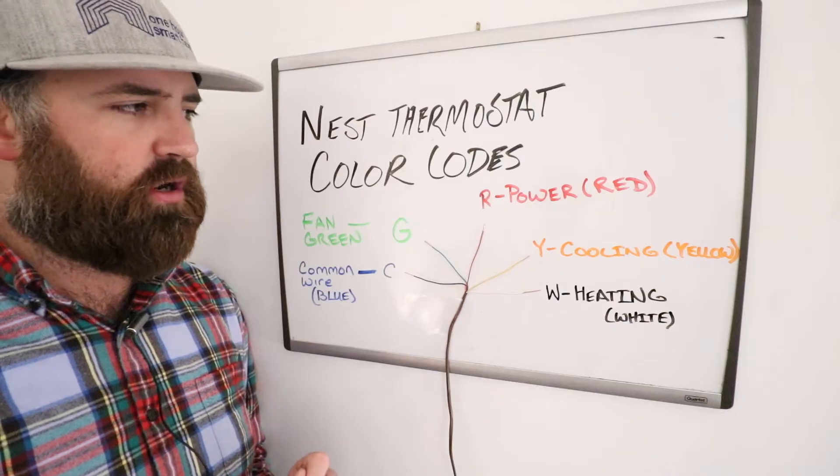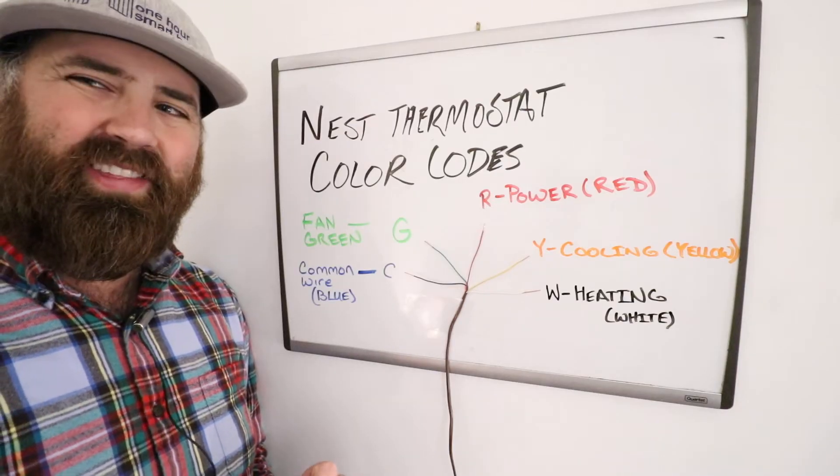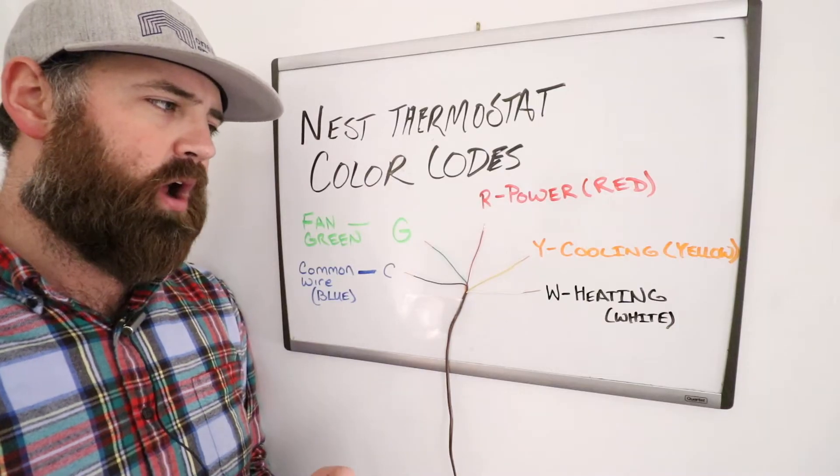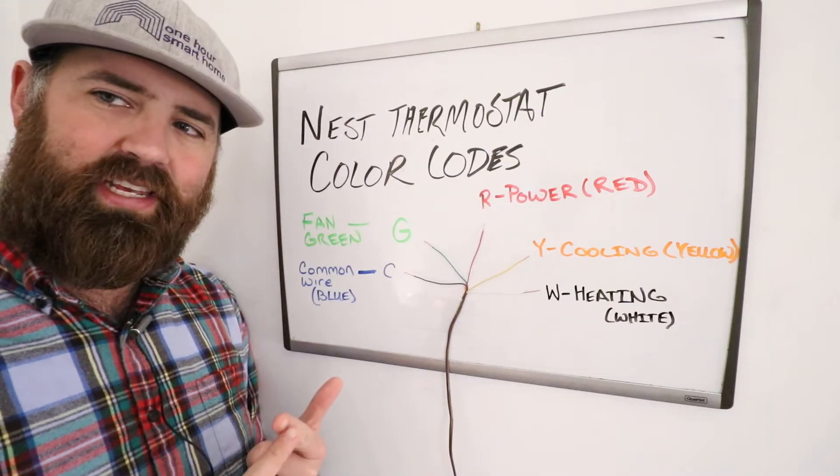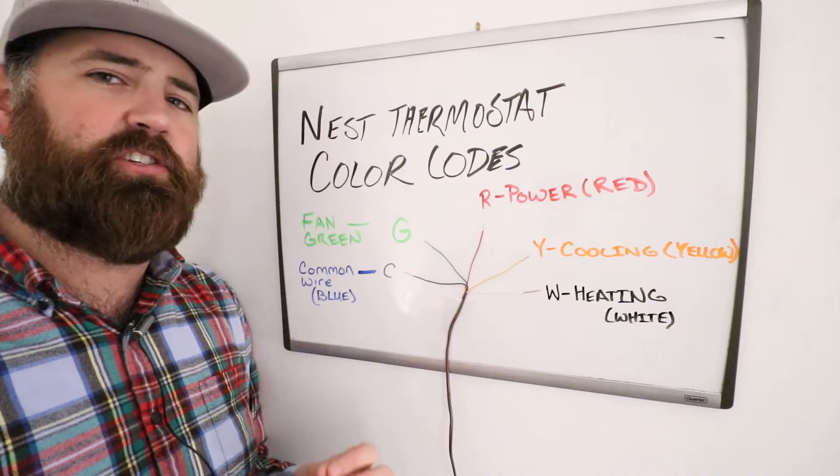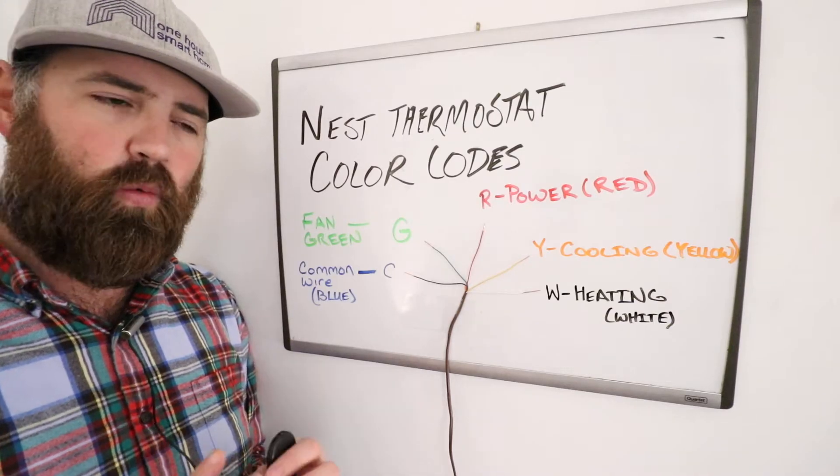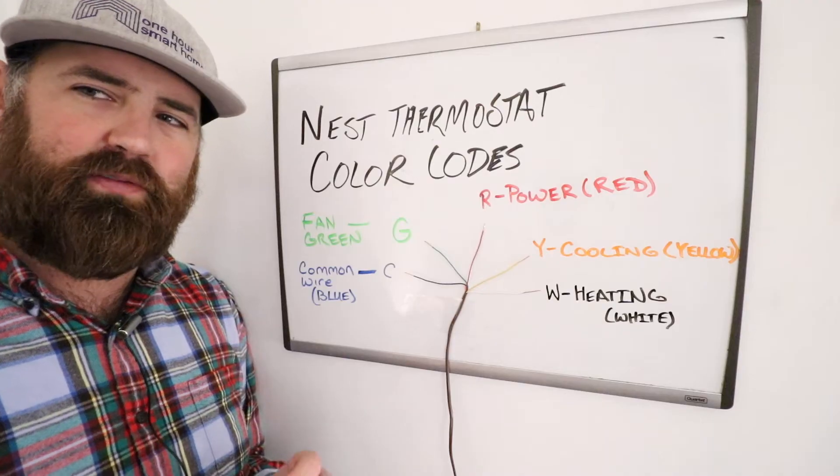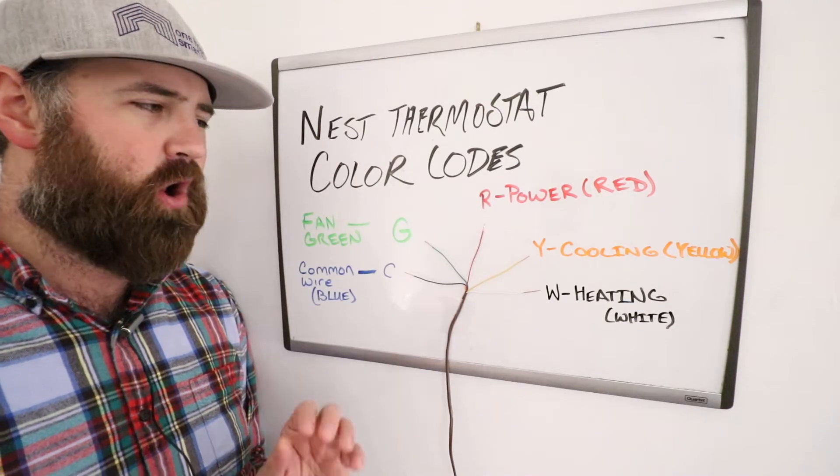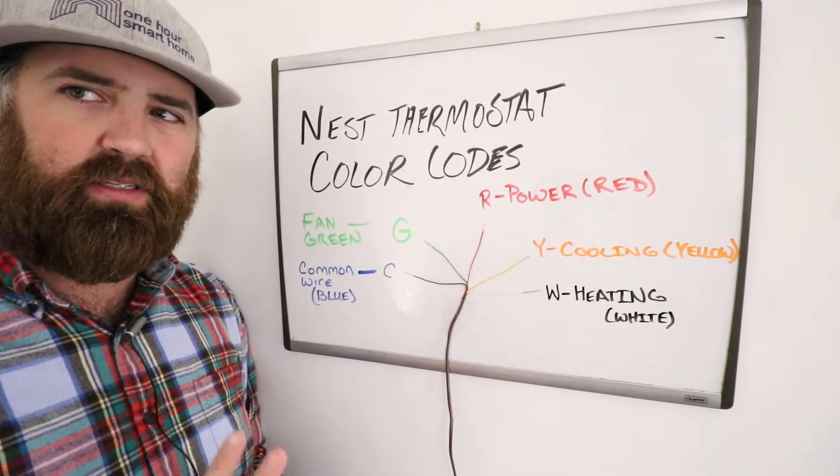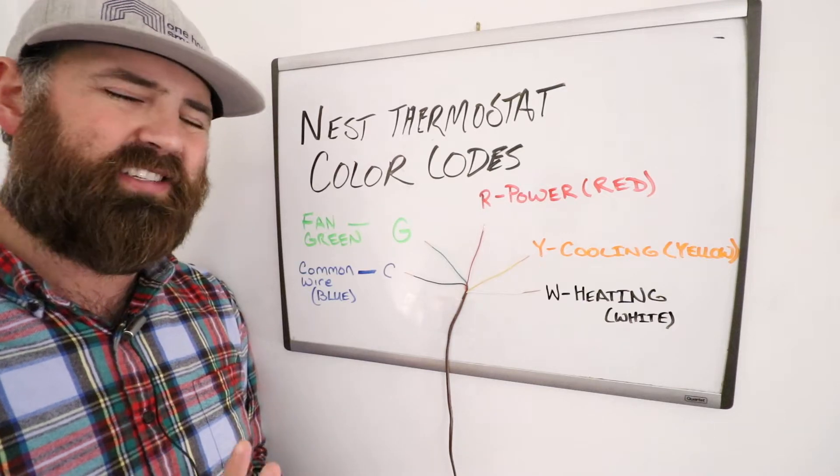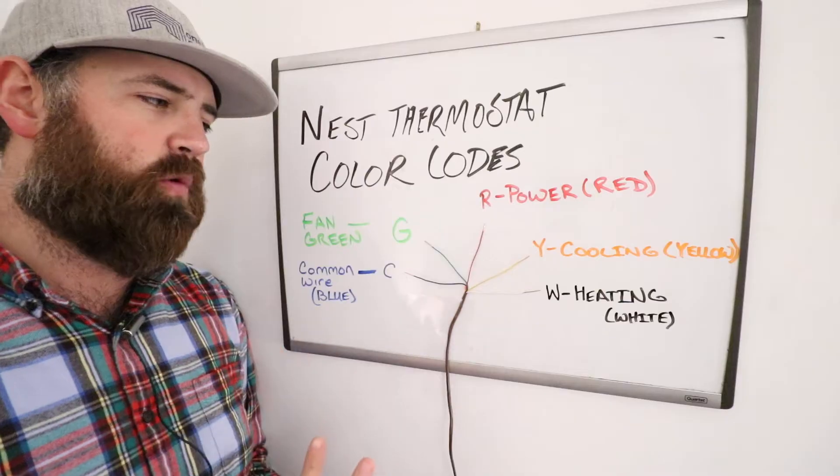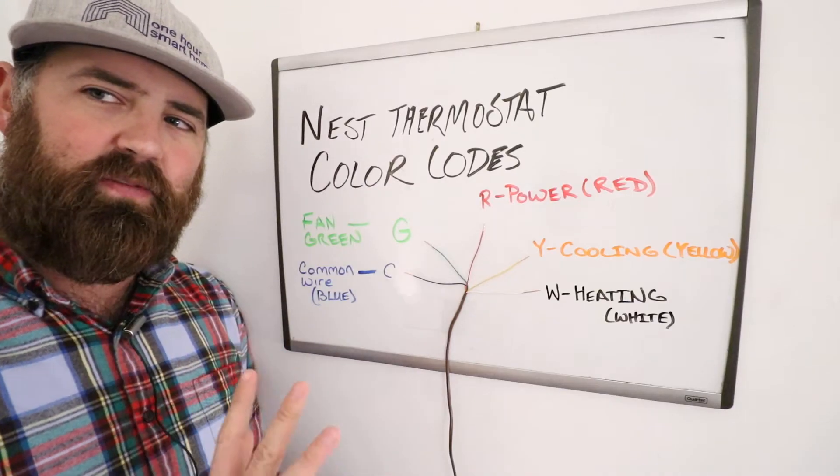The very first wire that we're going to start with is the R-Wire. The R-Wire is what provides power to your Nest, and that wire can go in either the RC or RH terminal. It actually doesn't matter which one that you wire it in. The Nest has two power terminals on it for those of you that have dual fuel systems. We're not really covering dual fuel systems in this video. We're covering the most common type of thermostat wiring for a Nest, which is what this five-wire system typically is found in most homes.